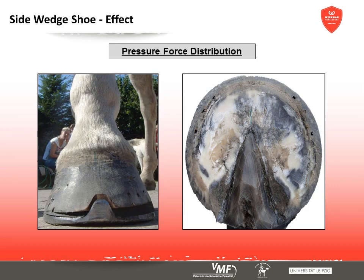Every horseshoe has, besides the effects on bones, ligaments, tendons and joints, an influence on the distribution of forces interacting with the hoof capsule. This section demonstrates which ground reaction forces develop directly between ground and horseshoe and the way they are transmitted towards the hoof capsule.